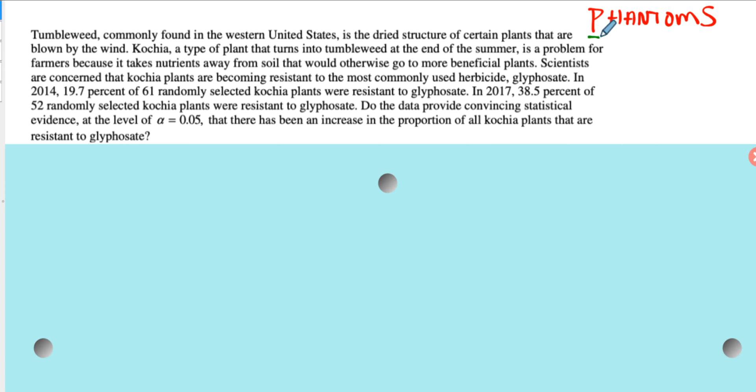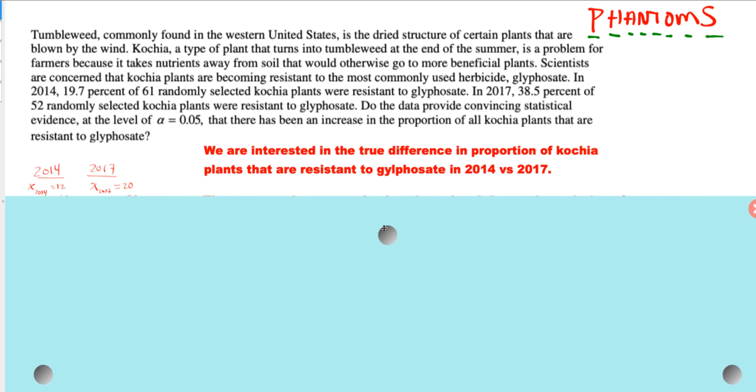So we need to talk about the parameter of interest. What are we actually concerned with here in this problem? We need to write our hypotheses, list what the assumptions are and the conditions that satisfy them, name the type of test we will do, then give a test statistic. We need to obtain a p-value, then we make a decision and give a statement in context. So as long as you go through that whole process, you should get full credit on this question.